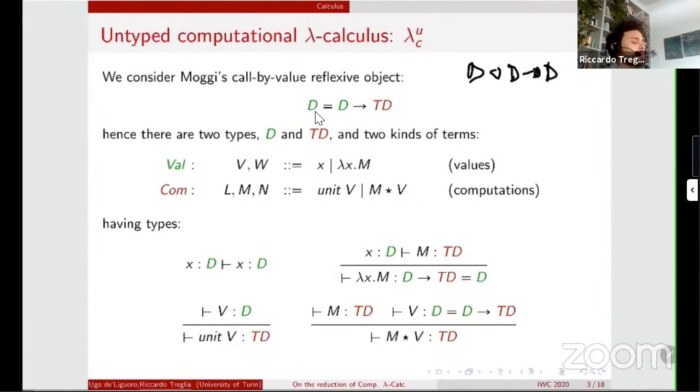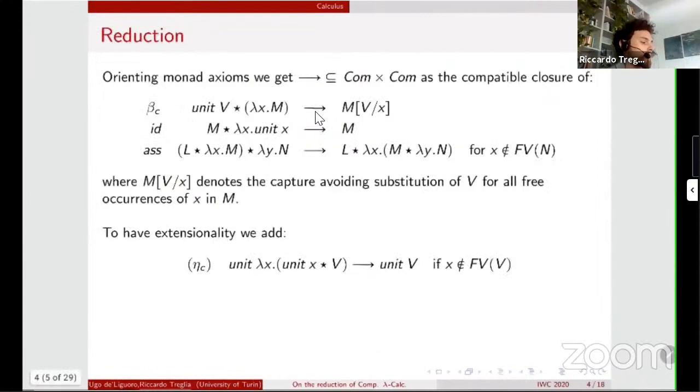or the space of endofunctions. In this case, semantically, we stated the existence of the call-by-value reflexive object, because we wanted to talk about call-by-value. But if we wanted to talk about call-by-name, we have to semantically provide the existence of such a type solution. So these two sorts between values and computation is mirrored in our syntax. In fact, we have values that are variables and abstractions and computations that are lifted values